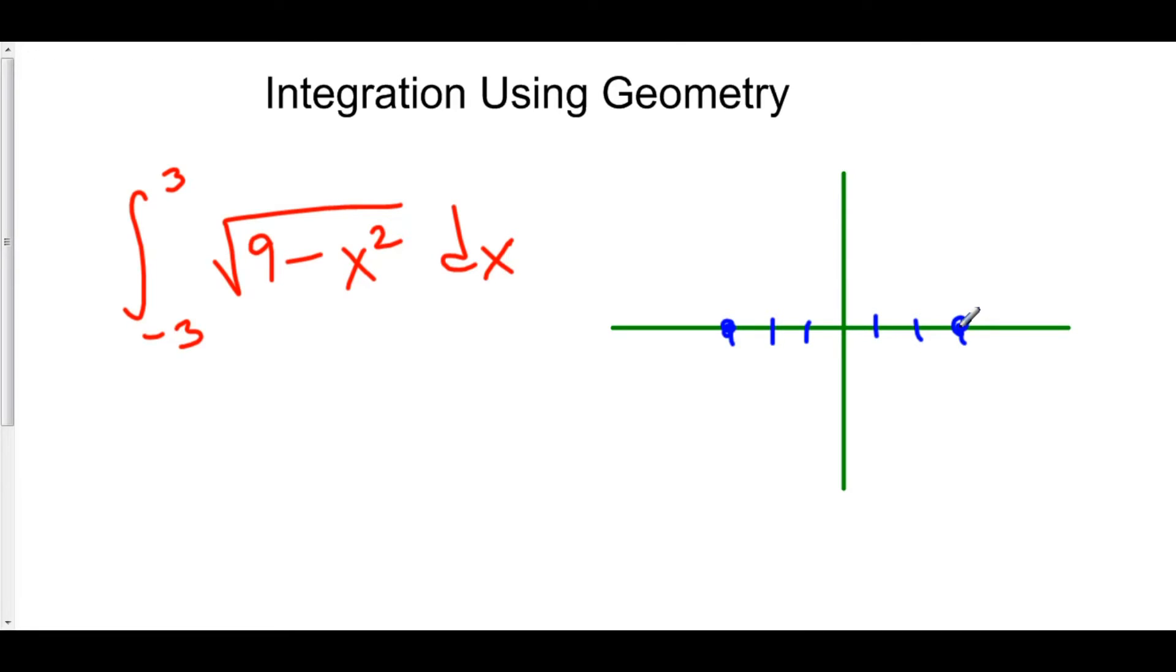Which is actually probably an amazing thing because this circle has radius 3. Because that right there is the radius squared. Whenever you see the square root of some number minus x squared, it's a semicircle. And this right here is your radius squared. Well, look at that. We have a semicircle, whose radius is 3 and we're going from negative 3 to 3.